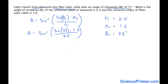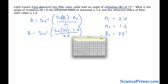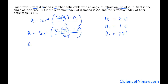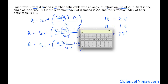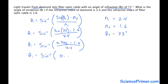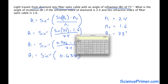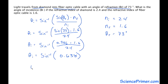If we take the inverse sine of all of that, we should get our answer. The first step is to find the sine of 73 degrees using a calculator. The sine of 73 degrees is 0.956. Putting this into the equation: 0.956 times 1.6 divided by 2.4 gives us 0.638. So now we have the inverse sine of 0.638. Taking the inverse sine of that gives us 39.6. So the angle of incidence from this problem equals 39.6 degrees.